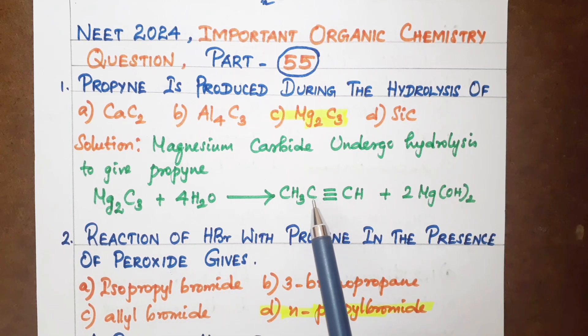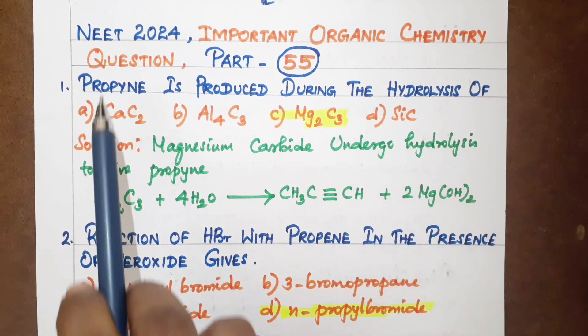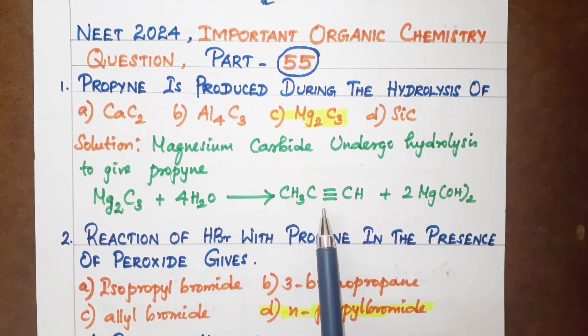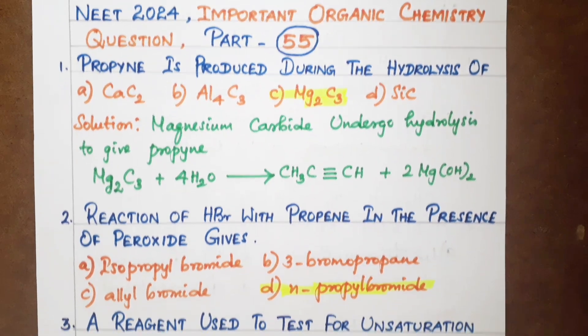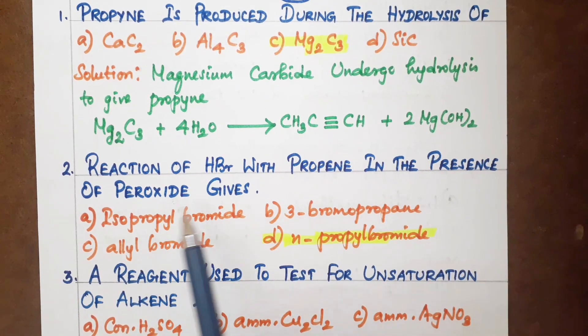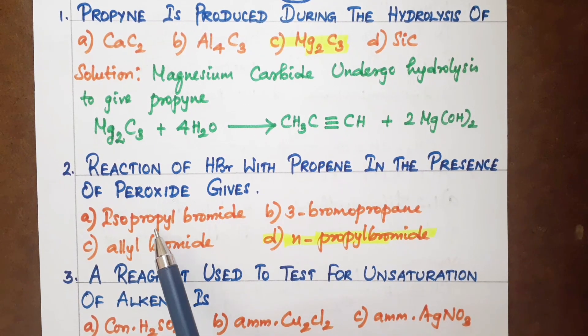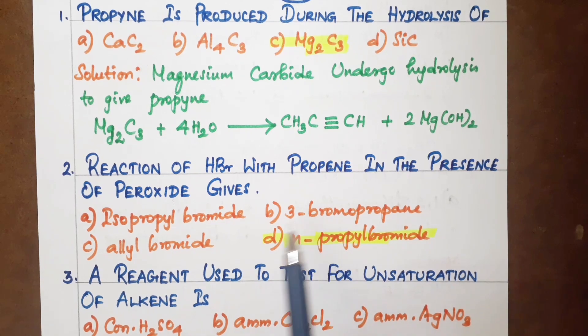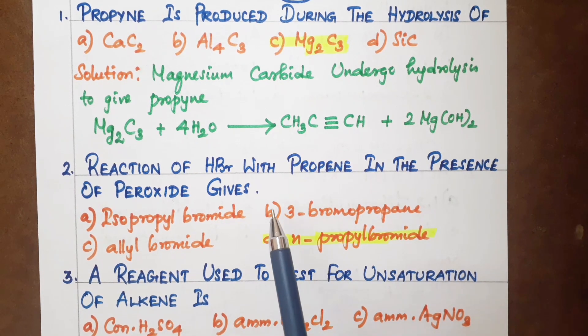Second question: Reaction of HBr with propene in the presence of peroxide gives which product? Options: isopropyl bromide, 3-bromopropane, allyl bromide, and n-propyl bromide. For this, you need to apply Markovnikov's rule.